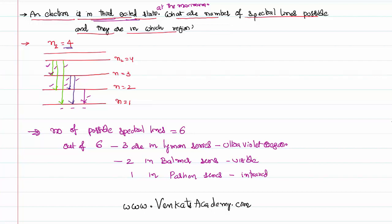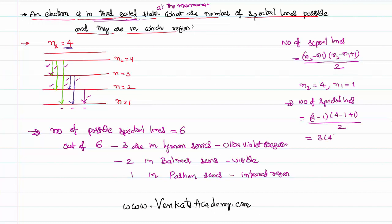We can also use a formula: number of spectral lines equal to (n2 minus n1)(n2 minus n1 plus 1) by 2. Here in this case, maximum of n2 equal to 4, minimum of n1 equal to 1. So substituting in the formula, we get (4 minus 1)(4 minus 1 plus 1) by 2, that is 3 into 4 by 2, equals 6.